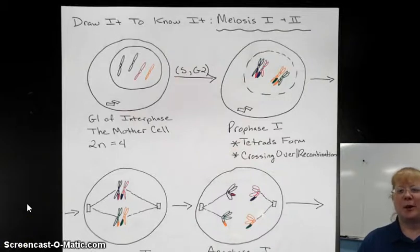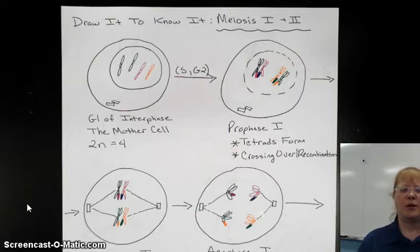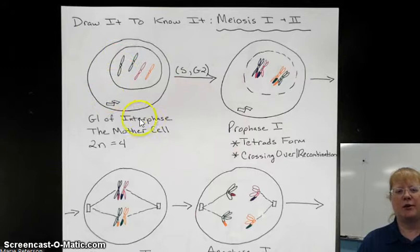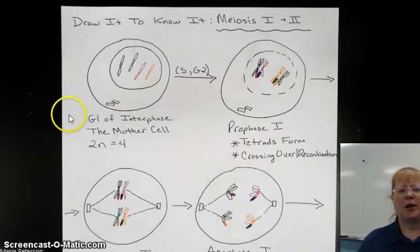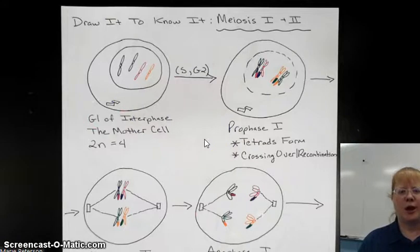We're going to be talking about meiosis — meiosis 1 and 2 — in this video, and this is how to do a meiosis drawing for a cell with a diploid number of 4, with each chromosome represented with a different color. We're going to start with our mother cell with a diploid number of 4, 2n equals 4, in G1 of interphase, just like we did back in the mitosis drawing. That way we can compare these two processes a little bit better once we're done with our drawing.